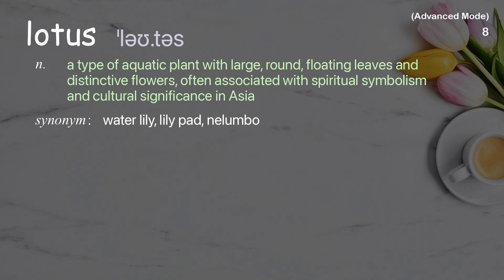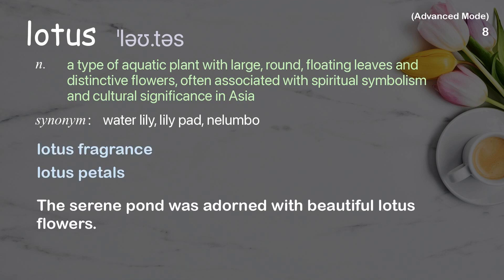Lotus: a type of aquatic plant with large, round, floating leaves and distinctive flowers, often associated with spiritual symbolism and cultural significance in Asia. Examples: lotus fragrance, lotus petals. The serene pond was adorned with beautiful lotus flowers.